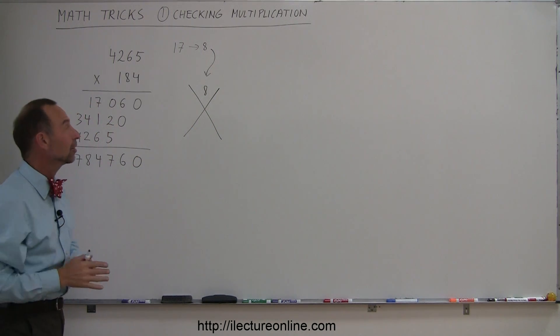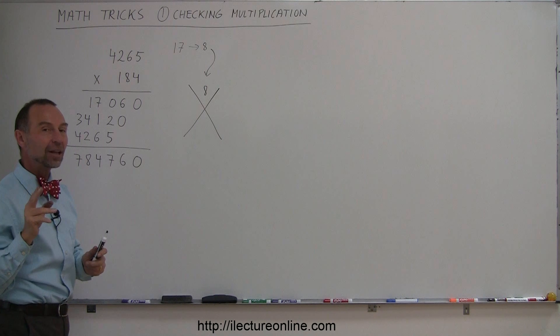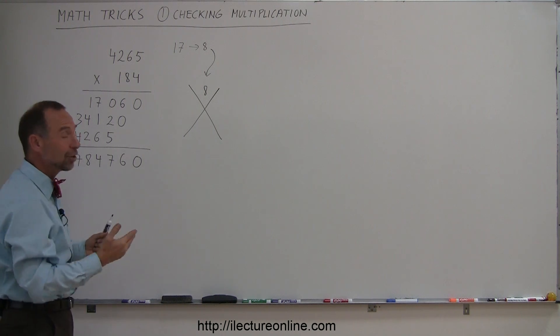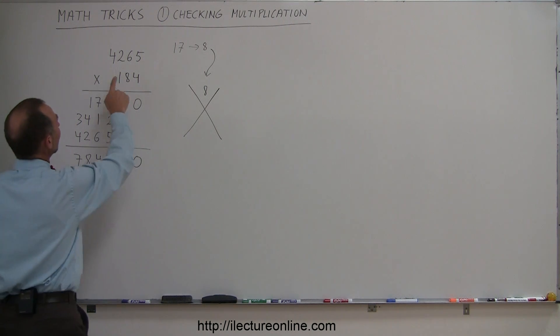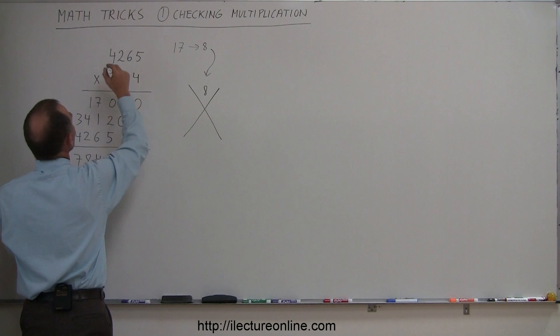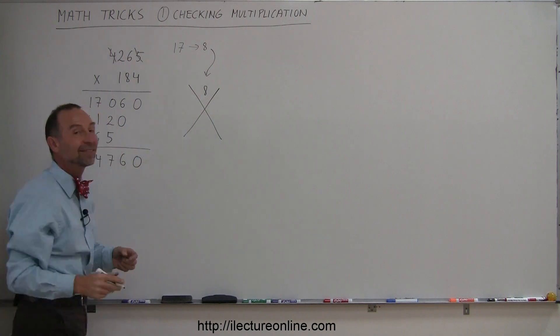Now a little shortcut: whenever two numbers add up to 9 or if you have a 9, you can simply get rid of that. For example, the 4 and the 5 add up to 9, so we can simply get rid of that and we're left with 2 plus 6. 2 plus 6 is 8. You put that over there, that's even faster.